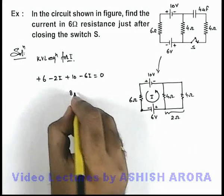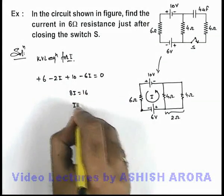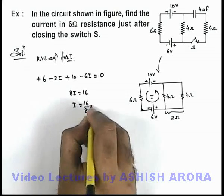We can write 8i equals 16, so i equals 16 by 8, which is 2 amperes.